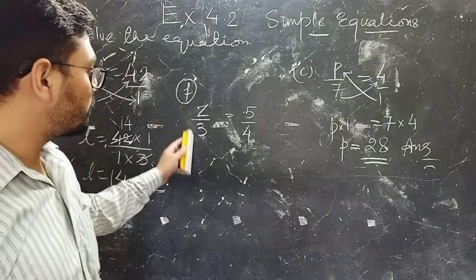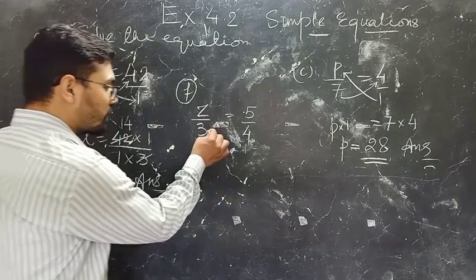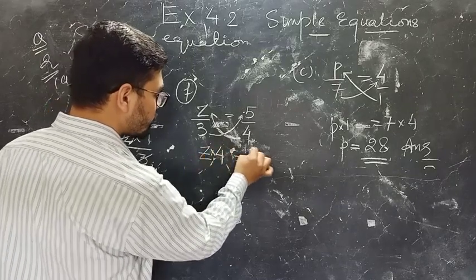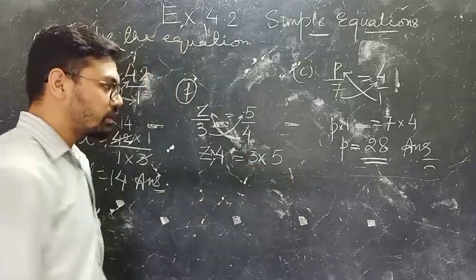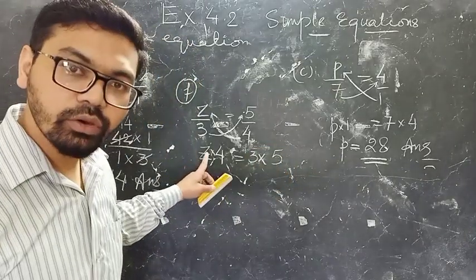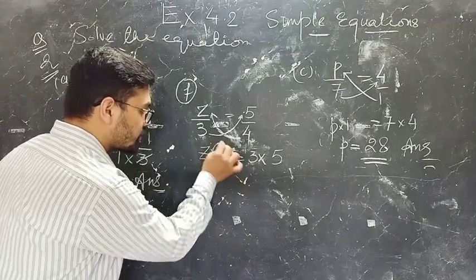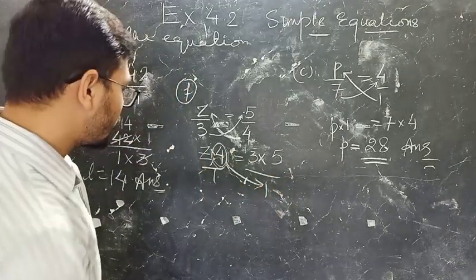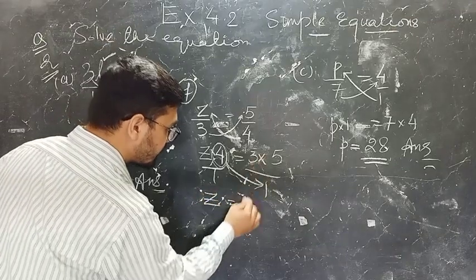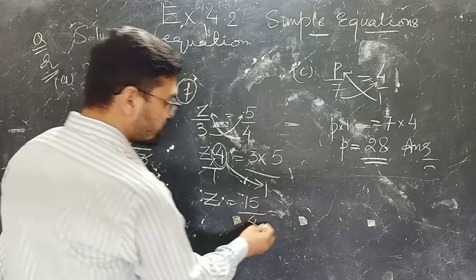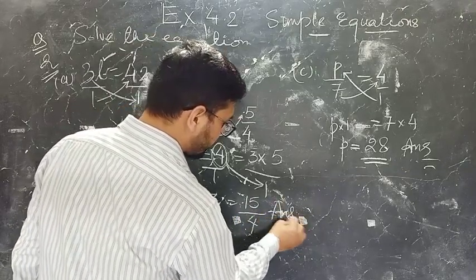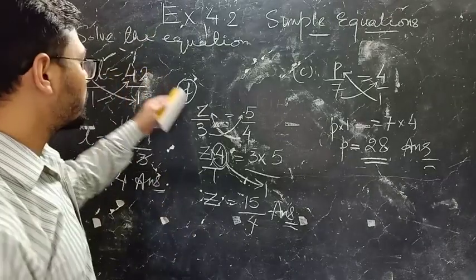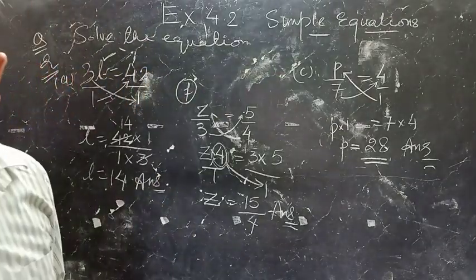Z upon 3 equals 5 upon 4. First cross multiply these values. So Z into 4 equals 3 into 5. In the third step, because we need to calculate Z, take the value multiplied with Z to the denominator by cross multiplication. So Z equals 15 divided by 4. L, Z, P — these are all variables in these questions.